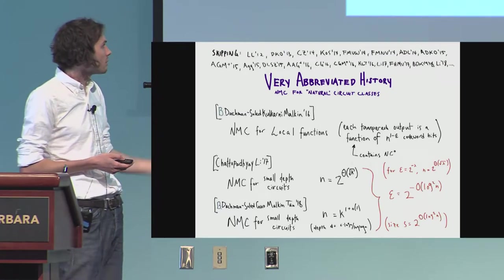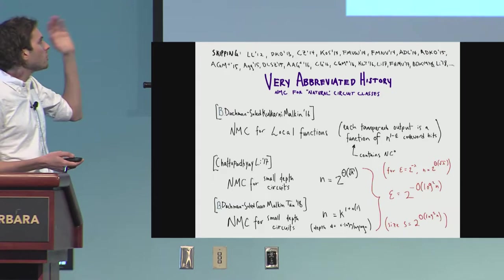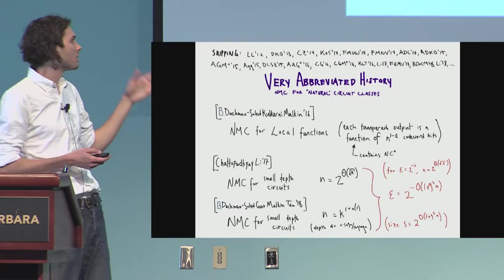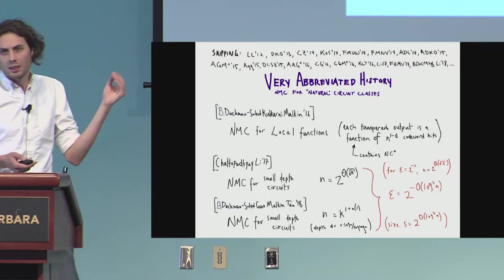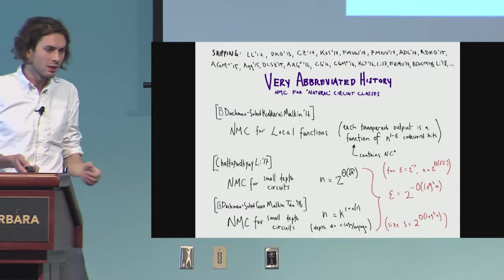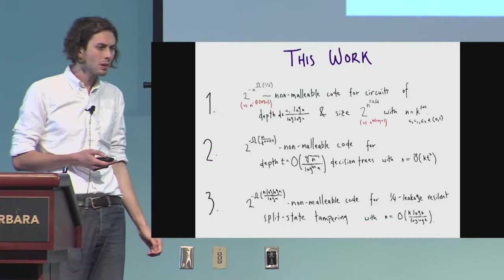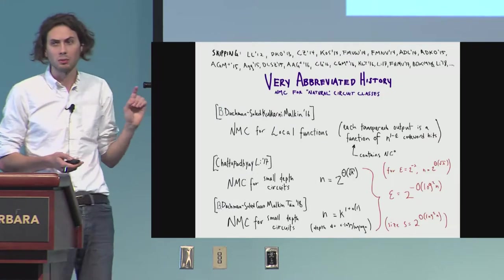So it's not quite as good as we would like. And in particular, if you fix this epsilon to be two to the minus lambda for some security parameter lambda, then the code word length is exponential in the security parameter.